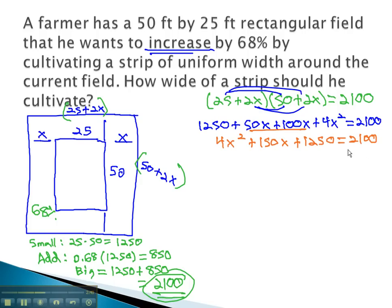Moving everything to the same side by subtracting 2,100, gives us the quadratic 4x squared, plus 150x, minus 850, equals 0.